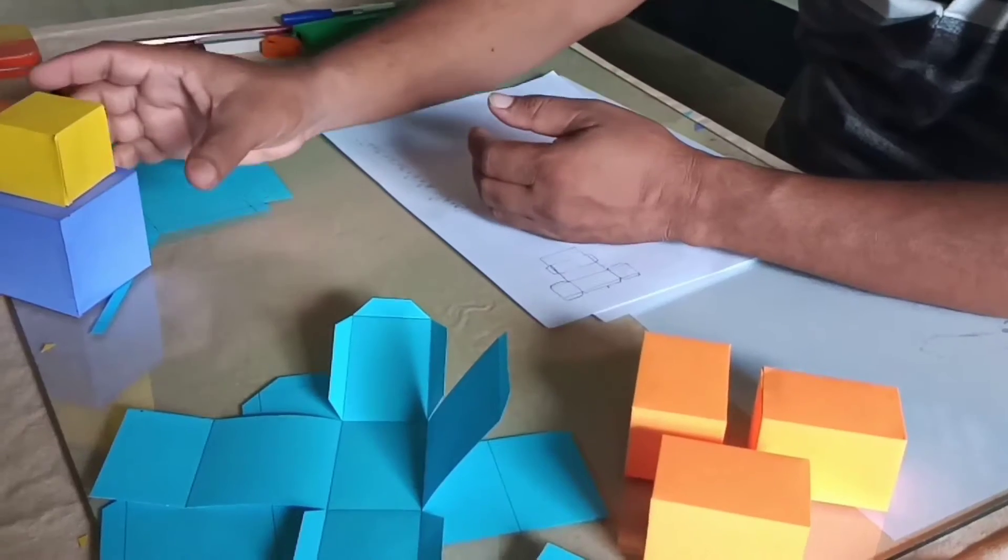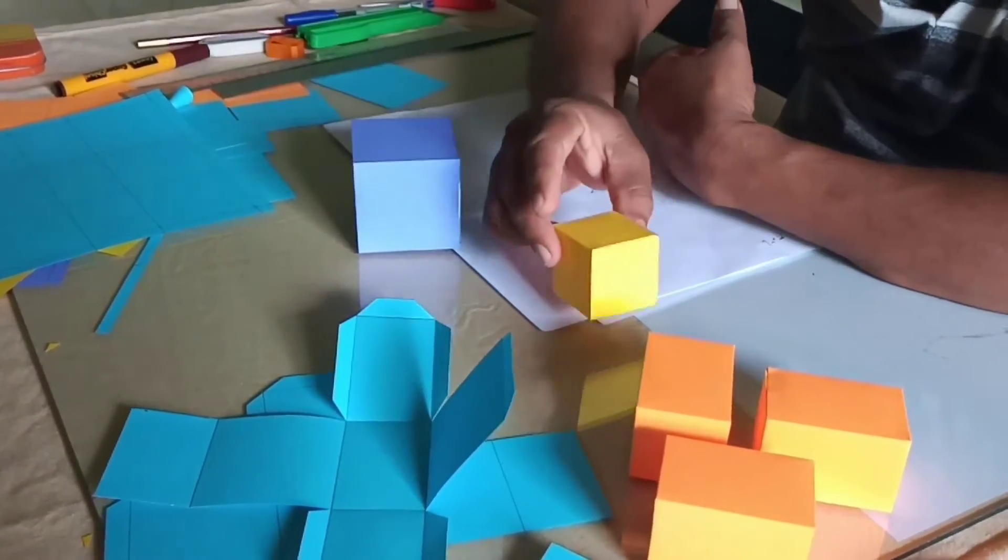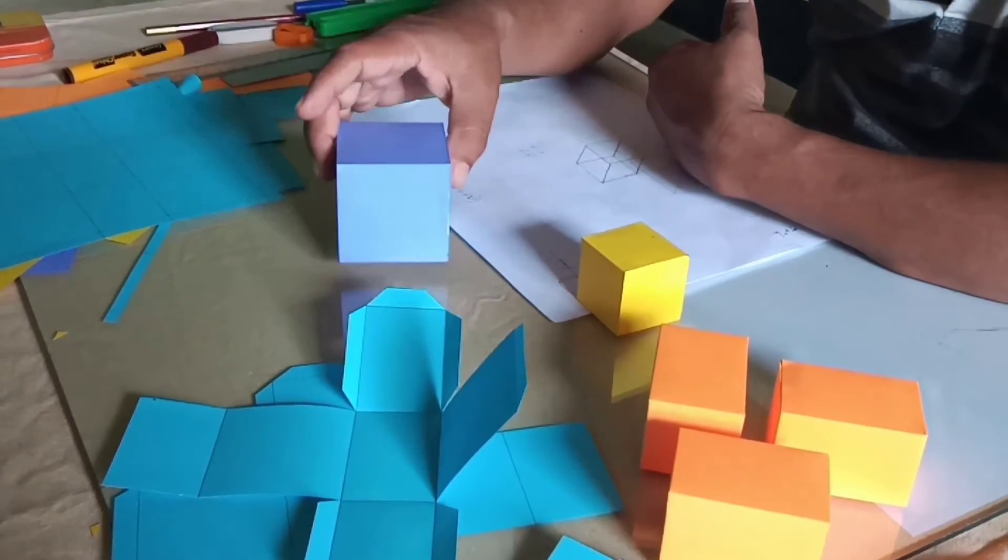So I'll show you how to make a model of this. For this model, we will have to make two cubes, a and b, and six cuboids.